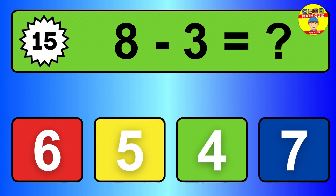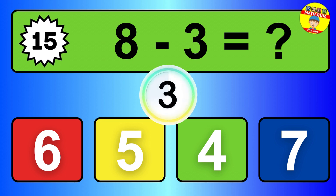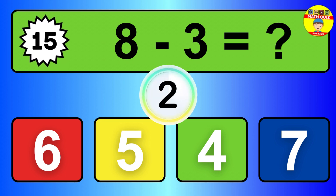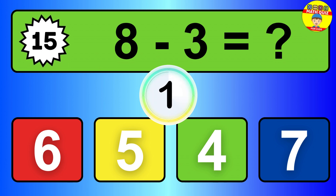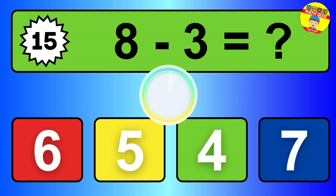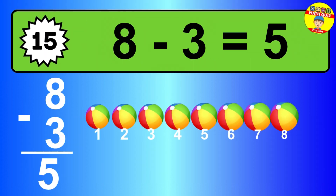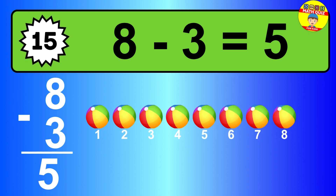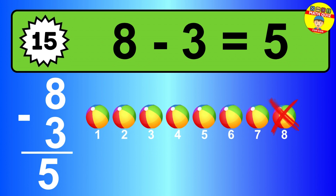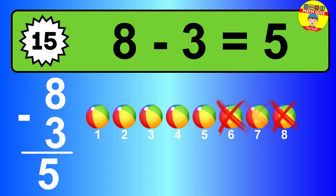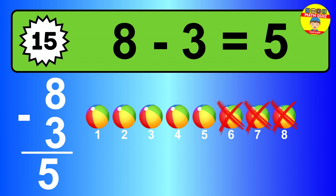Question fifteen. Eight minus three equals what? So the answer is eight minus three is five. Let's count it. One, two, three, four, five.